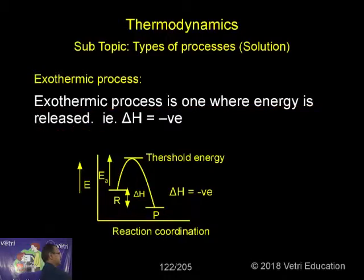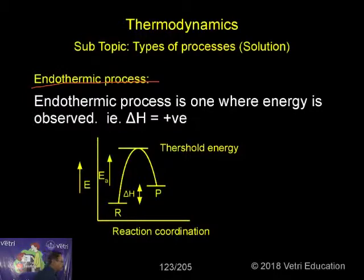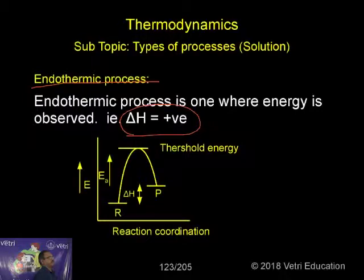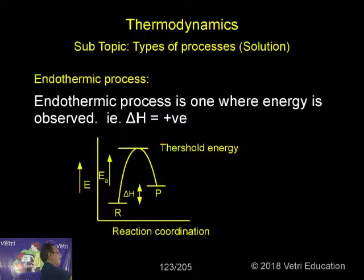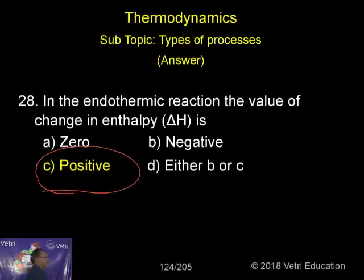In the endothermic process, the reactant is at low energy and the product is at high energy — we are supplying energy — so delta H will be positive. So very clearly you can understand the question: in the endothermic reaction, the value of enthalpy is positive.